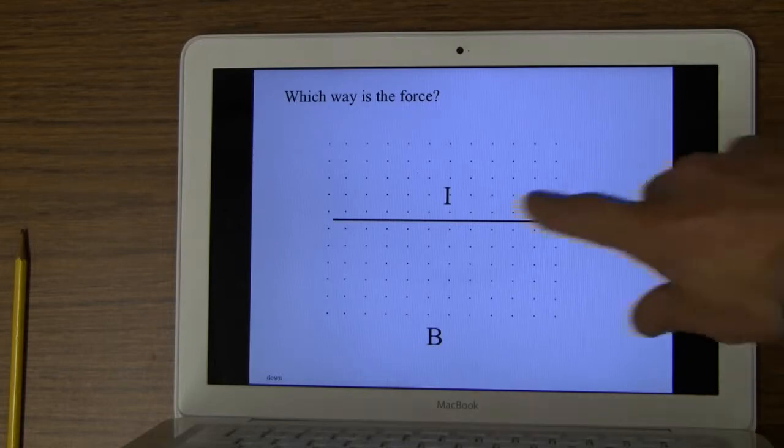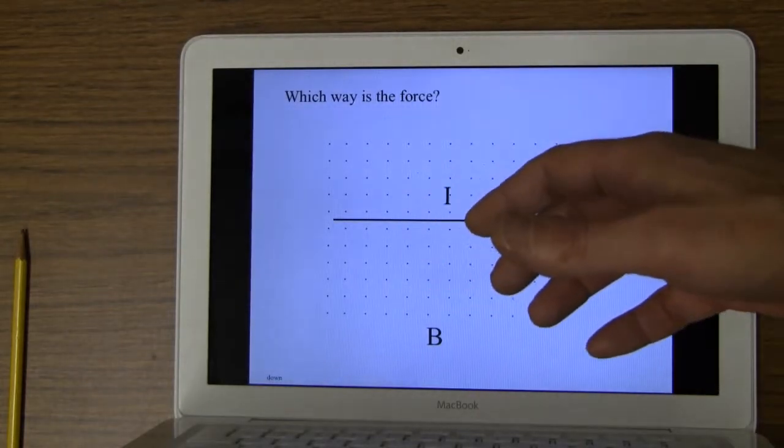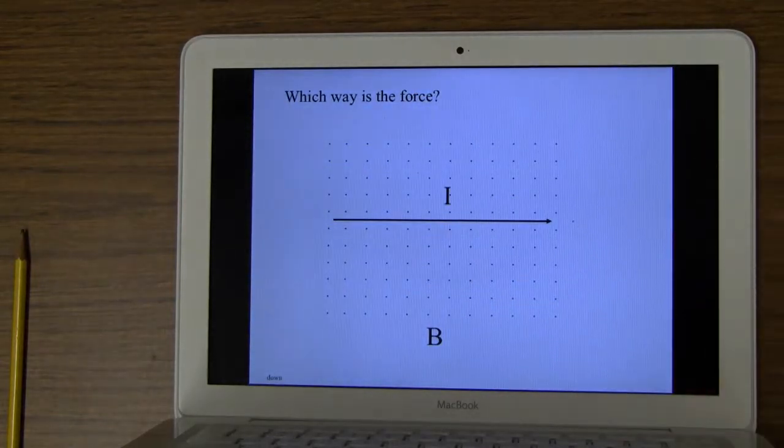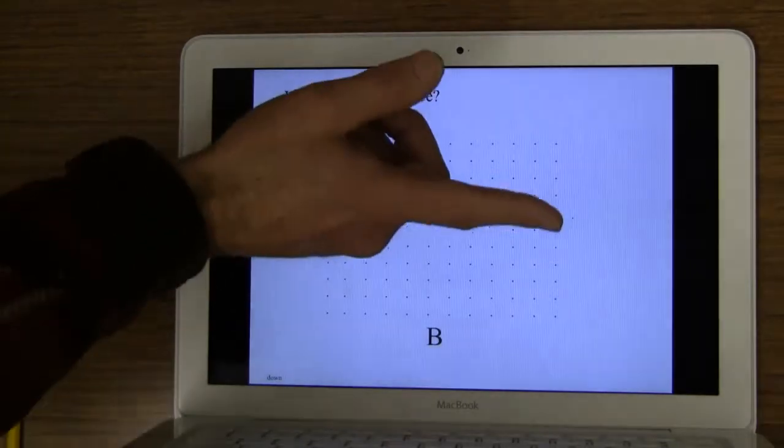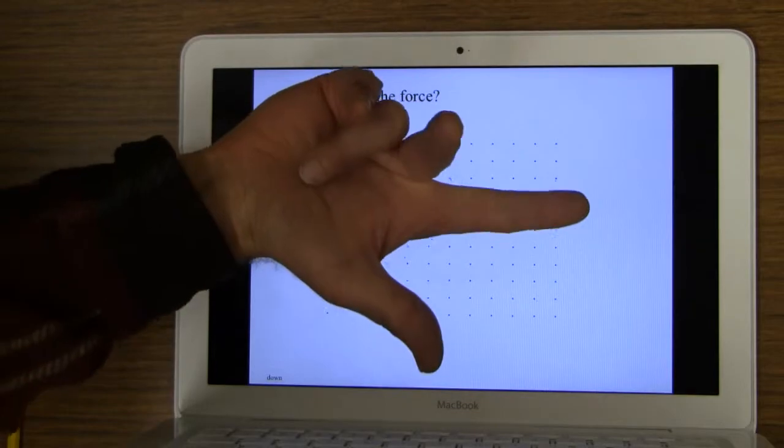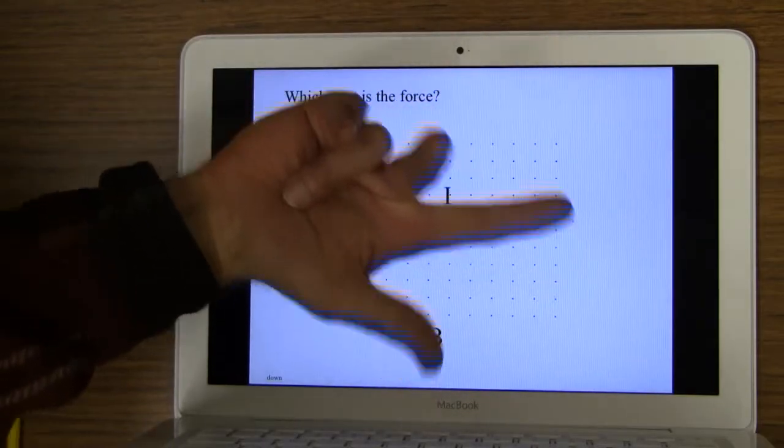All right, those dots mean a magnetic field out of the page. So dots are out of the page, x's are into the page, so let's do this. Index finger that way, magnetic field is out of the page, current is this way. The force would be down this page, or this way.